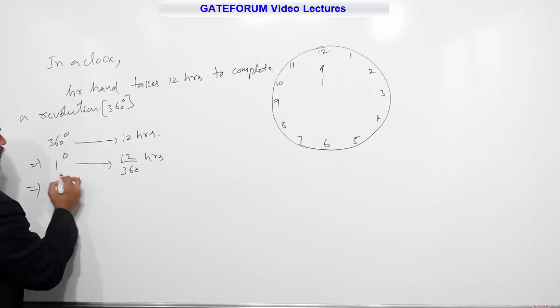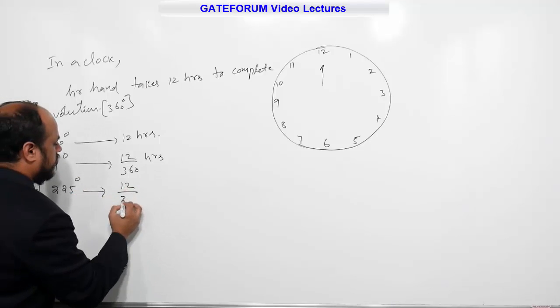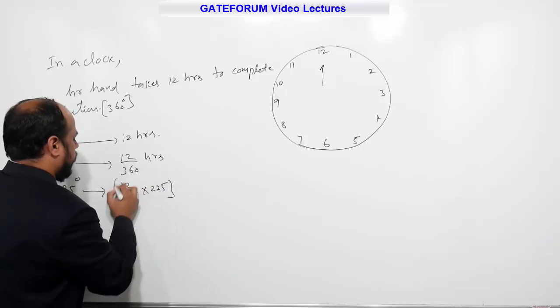Multiply both sides by 225 degrees. So, 12 by 360 into 225. This is the required time.